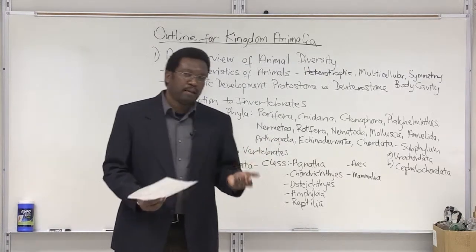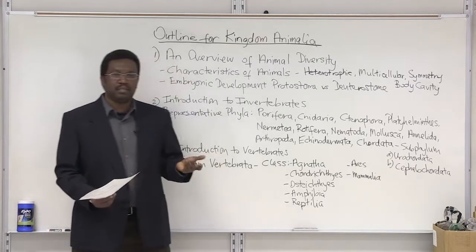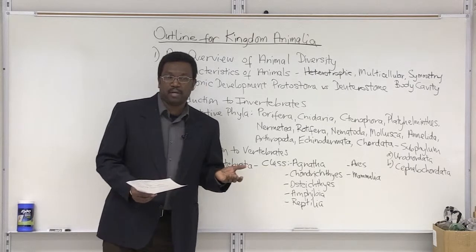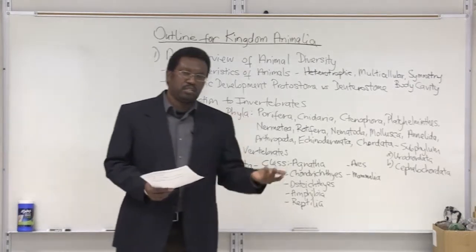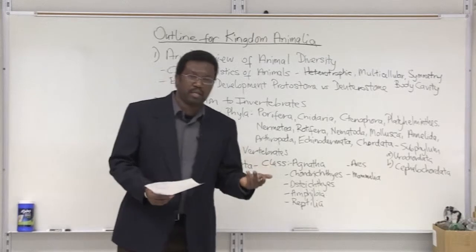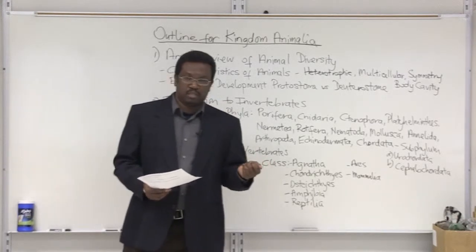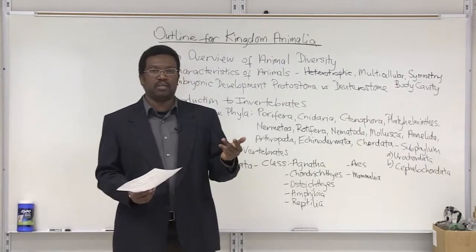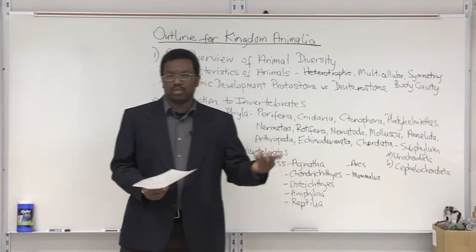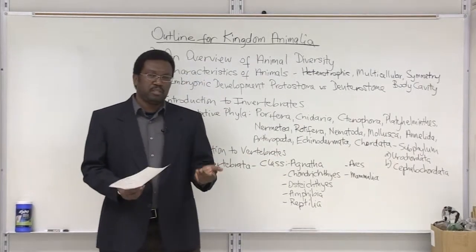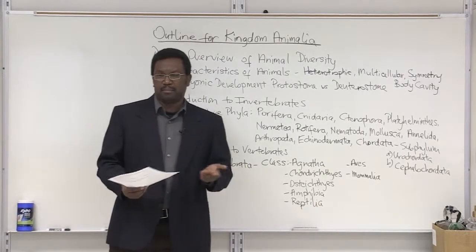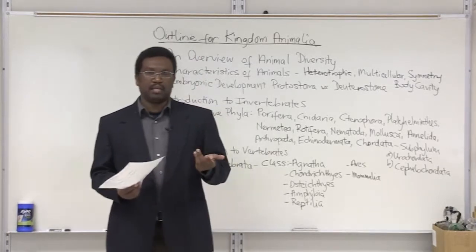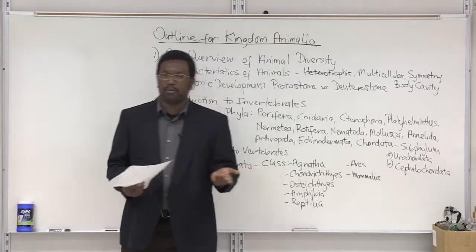Animals are also multicellular — many many cells make up an animal — along with embryonic germ layers. Some of the simpler animals have only two germ layers: ectoderm and endoderm. That's referred to as being diploblastic — just two germ layers. As we go down the list I'll refer back to their embryonic development and simplicity in terms of body structure, versus the more advanced animals that consist of three germ layers, which are triploblastic.